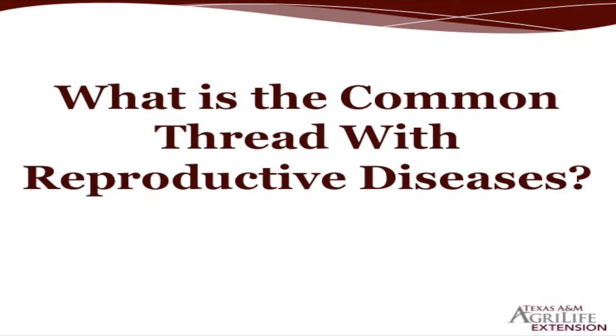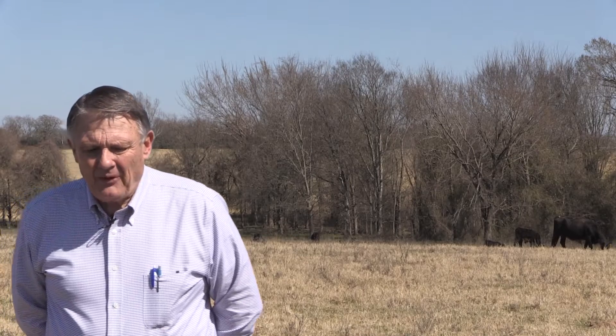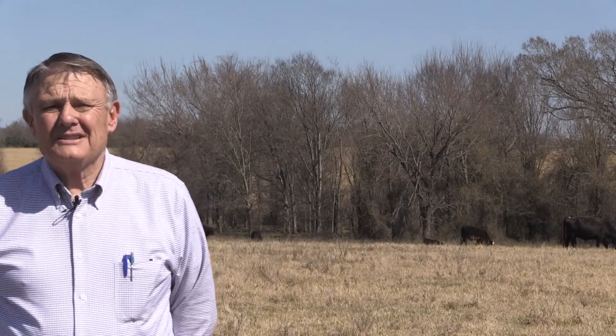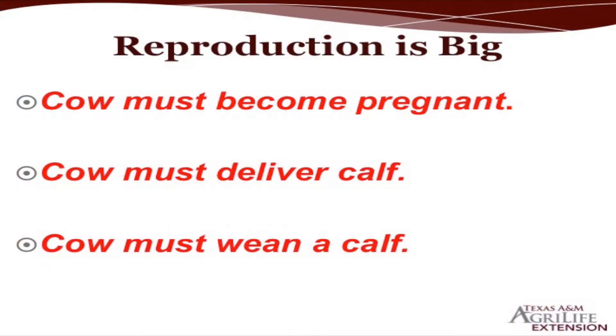What is the common thread of reproductive diseases? They're subclinical — like an iceberg, all you see is the tip. You can have BVD circulating through your herd, drive through those cows, and they look the same as if they didn't have BVD. Or you've got trich in your herd and that bull is going to look like any other bull, those cows like any other cows.